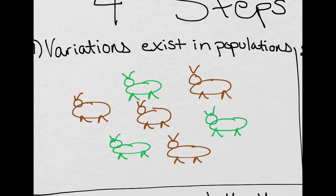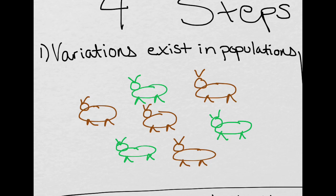The first step, let me zoom in here, is that variations exist in populations. For example, we know that variation exists among humans. There's variation in height, variation in skin color, variation in eye color, hair color, all of the traits that you talk about in genetics. There's variations in those.